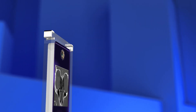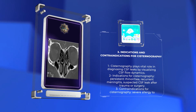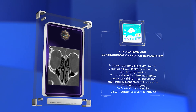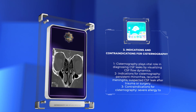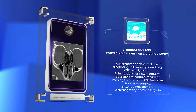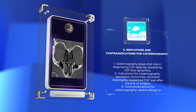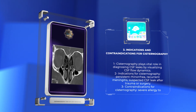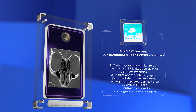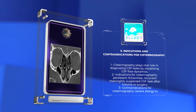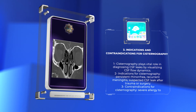Cisternography plays a vital role in diagnosing CSF leaks by visualizing the CSF flow dynamics. However, it is essential to consider the indications and contraindications for this imaging modality. Indications may include persistent rhinorrhea, recurrent meningitis, or suspected CSF leak after trauma or surgery. Contraindications may include severe allergy to radiotracers or uncontrolled intracranial hypertension.